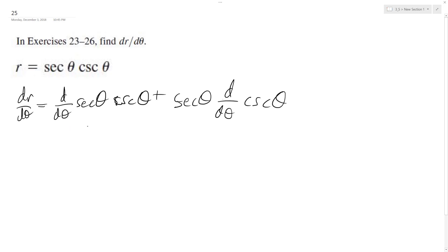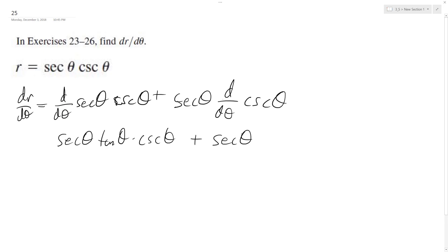So the derivative of secant is equal to secant tangent, so secant theta tangent theta times cosecant theta, plus secant theta, and the derivative of cosecant is equal to negative cosecant theta cotangent theta.